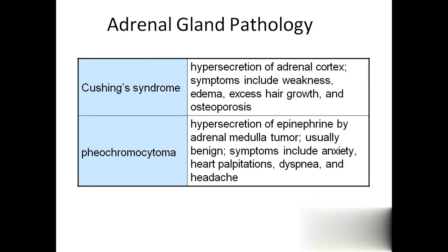Next, Cushing syndrome, which is the opposite of Addison's disease - it involves hypersecretion of the adrenal cortex. The symptoms include weakness, excessive hair growth (hirsutism), edema, and osteoporosis.